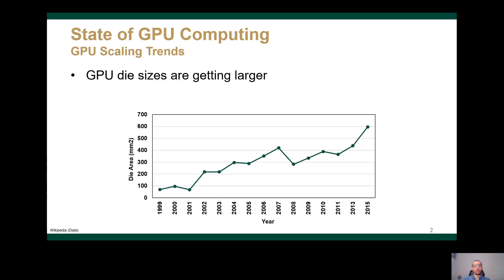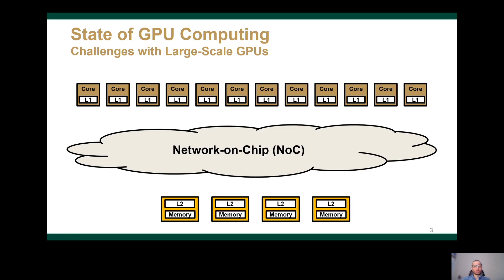GPUs are a crucial component in most computing systems, as they provide orders of magnitude faster and more energy-efficient execution for many general-purpose applications. To match the increasing computational demand, GPUs have been scaling in die size, as shown in this plot. As the die size increases, the number of cores increases as well, which leads to an increase in the volume of requests from the many cores, putting pressure on the reply bandwidths from the few L2 slices.